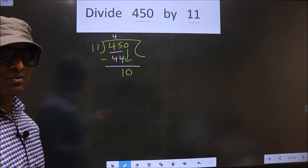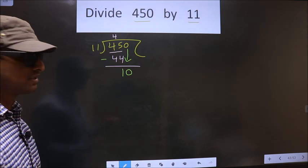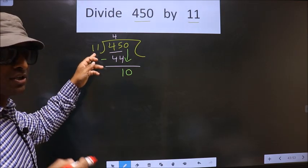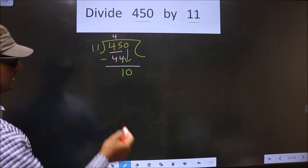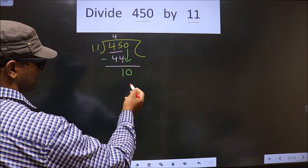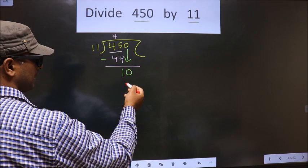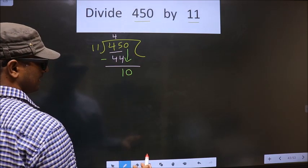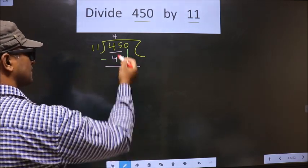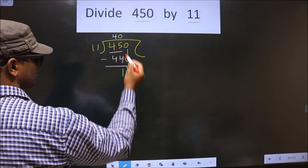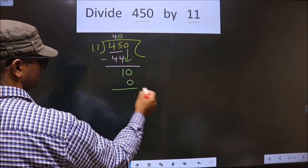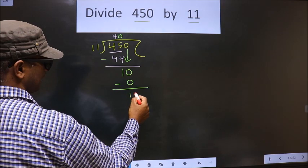Okay. Instead, what you should think of is: to this number, what should you multiply to get a number here? If I multiply by 1, I get 11 here. But 11 is larger than 10. So what we do is we multiply by 0. So 11 times 0 is 0. Now you subtract, you get 10.